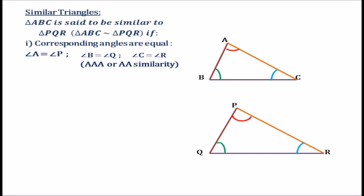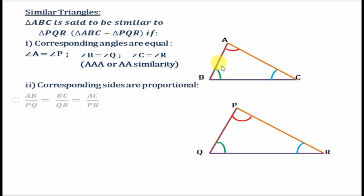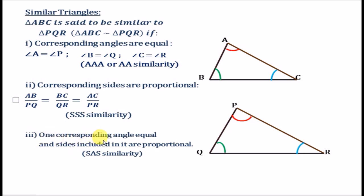The next condition for similarity of triangles is that the corresponding sides should be proportional. The ratio of the corresponding sides must be equal: AB by PQ equals BC by QR equals AC by PR. This is known as SSS similarity — side, side, side similarity. There is a third condition as well, where one corresponding angle is equal and the sides included in it are proportional; however, this SAS similarity criterion will not be used in the derivation of section formula and will be elaborated when we cover the chapter on triangles.